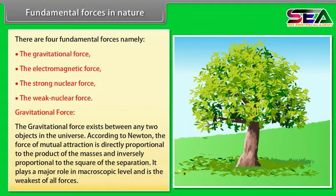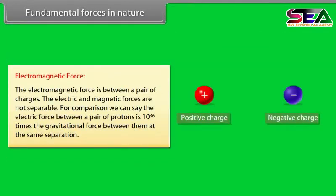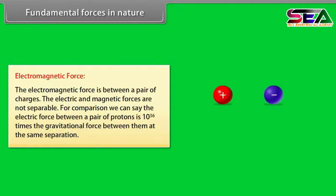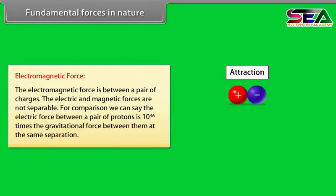The electromagnetic force is between a pair of charges. The electric and magnetic forces are not separable. For comparison, we can say the electric force between a pair of protons is 10 raised to the power 36 times the gravitational force between them at the same separation.